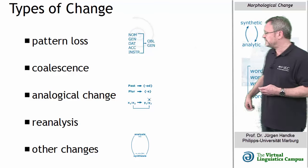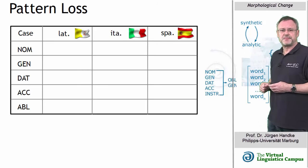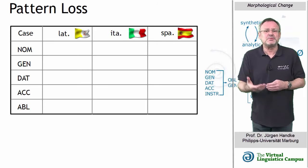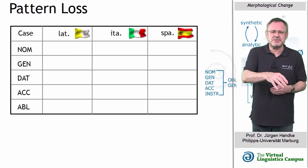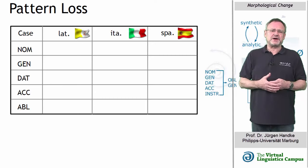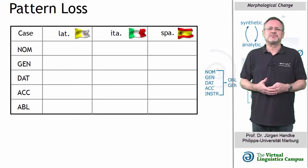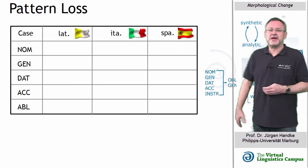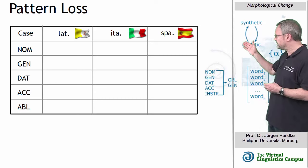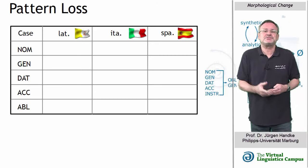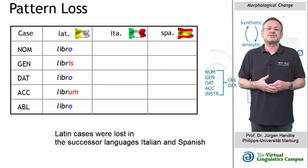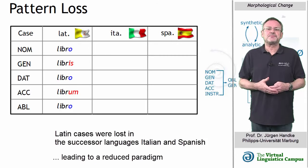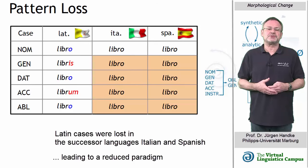Let's start with pattern loss. Sometimes languages may lose entire patterns, which in turn means that all words formed by that pattern disappear. This applies primarily to inflection. For example, as shown here, we find cases that exist in Latin but not in its modern Romance successor languages such as Italian or Spanish.